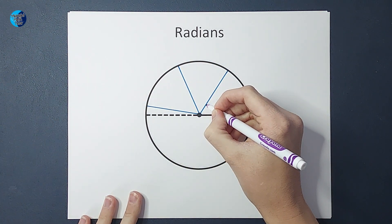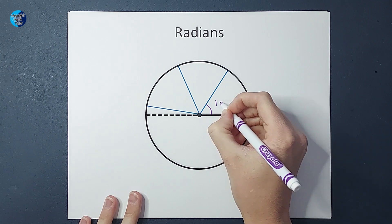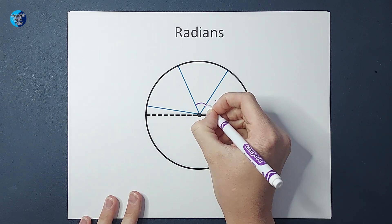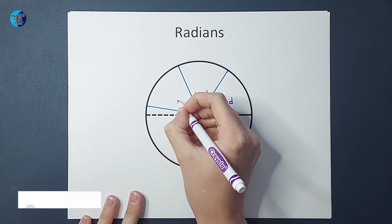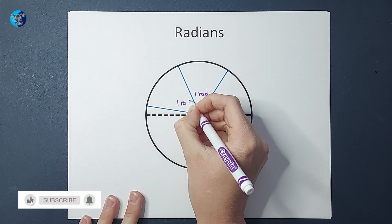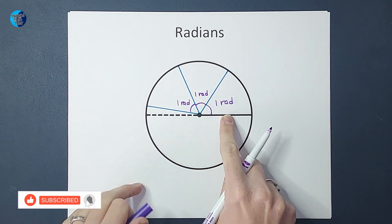Well, this, like we said before, is one radian. This is another radian. And this is another radian. So, so far up there, I have three radians.